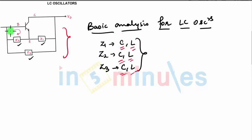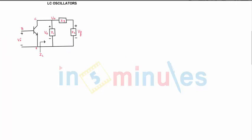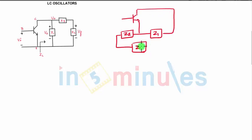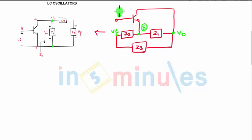Now in this circuit, if I open the feedback loop, how will this circuit look? It will look like this — we are opening the feedback loop. The initial circuit is redrawn: here you had Z2, here you had Z1 and Z3. The voltage across Z2 was Vf, the feedback voltage. This is your Vo. You can see the emitter, base, and collector — Vo is connected between emitter and Z1 is connected between E and Vo.